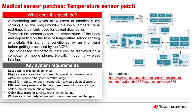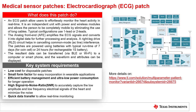An ECG patch allows users to effortlessly monitor the heart activity in real time. It is an independent unit with power and wireless modules, allowing the person to be completely mobile by eliminating long cables. Typical configurations use one or two leads. The analog front end amplifies the ECG signals and converts them into digital data for further processing. An RLD or right leg drive circuit helps cancel common mode AC line interference. The patches are powered using batteries with a typical run time of seven days for coin cell or 24 hours for a rechargeable 1S battery. Resultant data can be transferred via BLE or Wi-Fi to a computer.